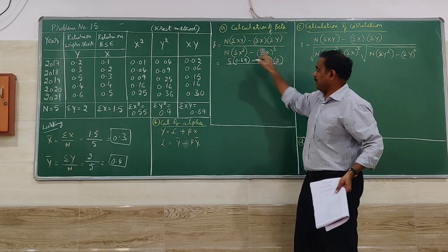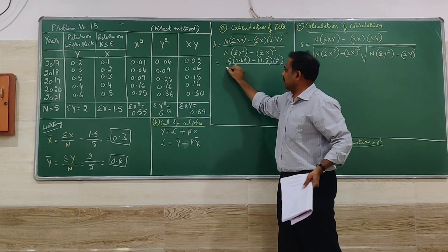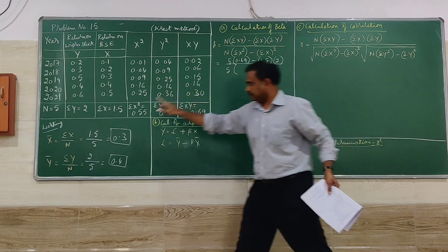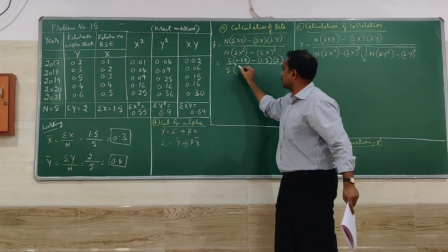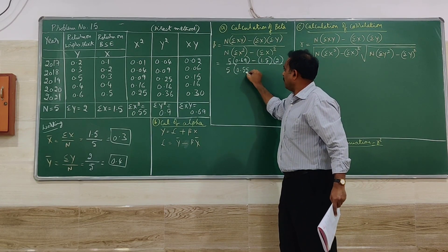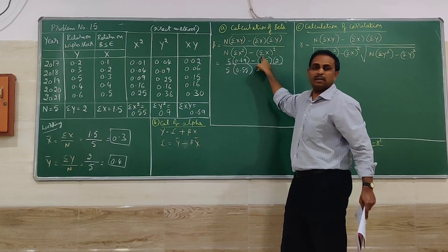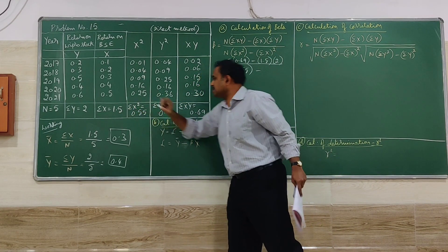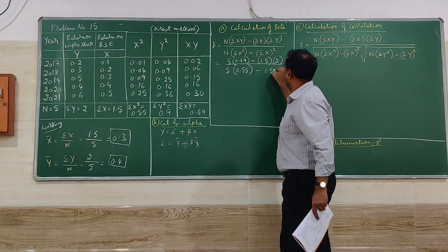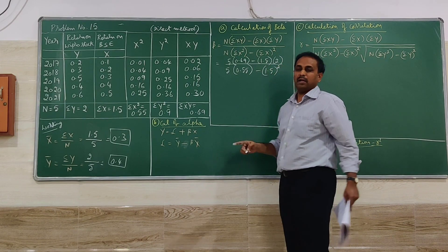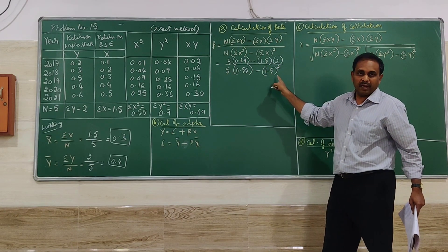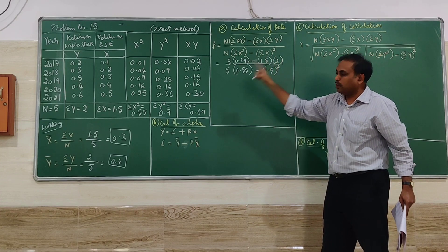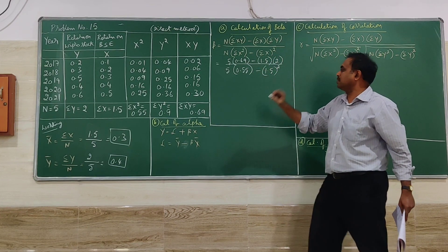So divided by, again, starting with N, that is 5. Summation X square 0.55 minus summation X whole square. Summation X is 1.5 whole square. So substitution has to be very careful and we have to verify before we go for simplification.